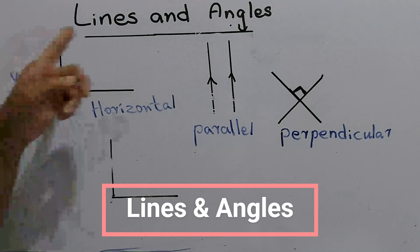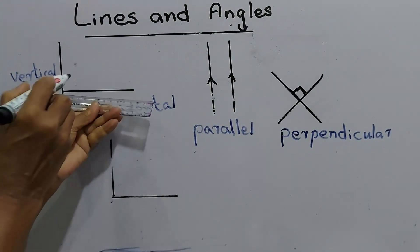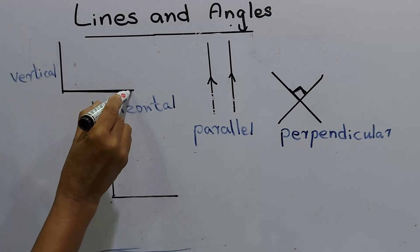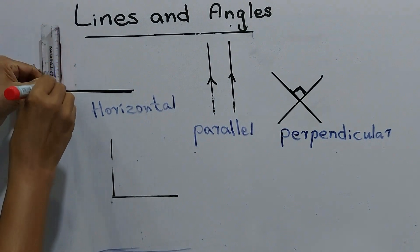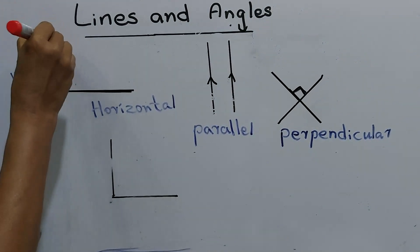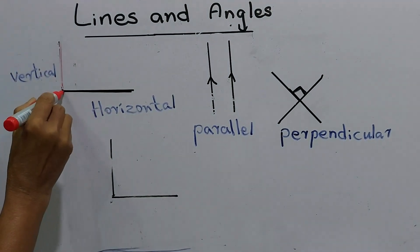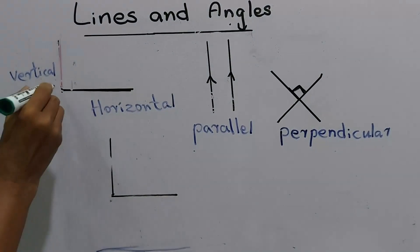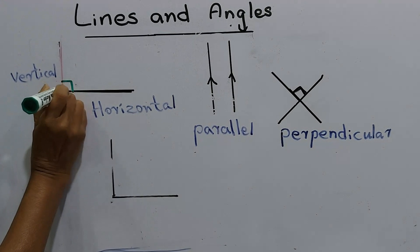Today we are going to speak about lines and angles. This line we call a horizontal line. This line we call a vertical line. When two lines meet together it makes a vertex — a horizontal line and a vertical line meeting together at a vertex.